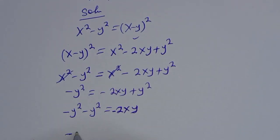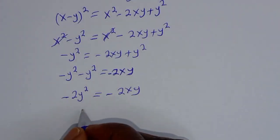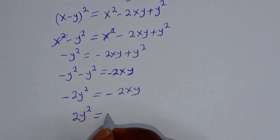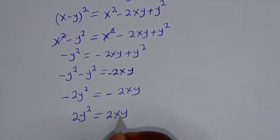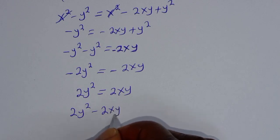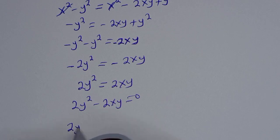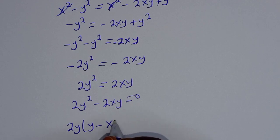Then minus y² minus y² is equal to minus 2xy, giving us minus 2y² equals minus 2xy. Multiplying by minus 1, we have 2y² equals 2xy. So 2y² minus 2xy is equal to 0.